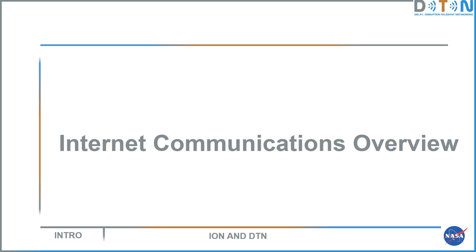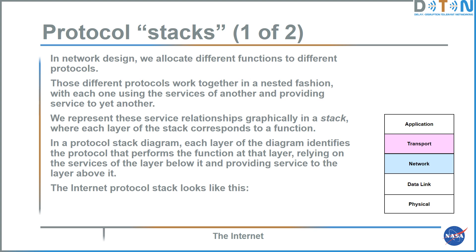Fortunately, we've got a terrific model for the capabilities we'd want from a solar system network: the internet itself. To understand the motivation for some design decisions in delay-tolerant networking, it's helpful to do a quick review of internet architecture. A key concept is the protocol stack: in network design, we allocate different communication functions to different protocols that work in a nested fashion, where each protocol uses the services of others and provides services to others.